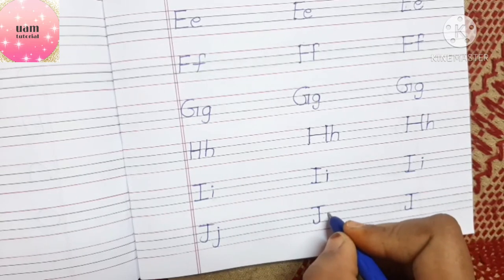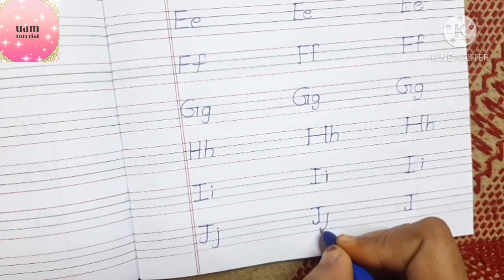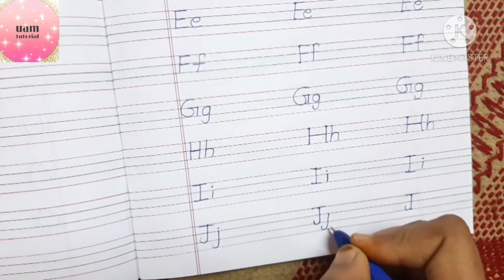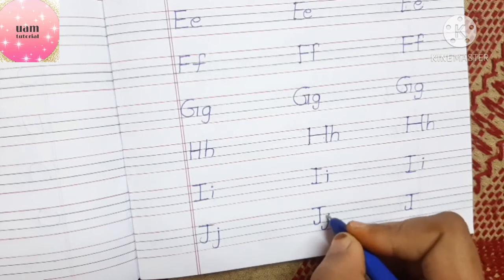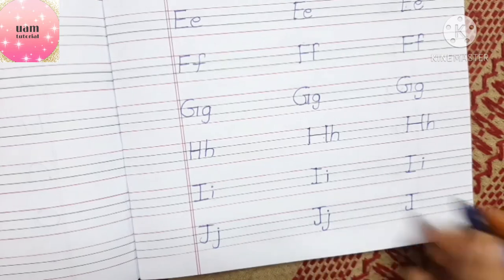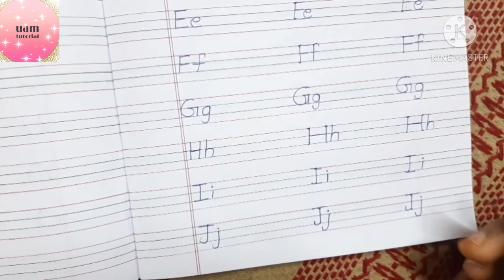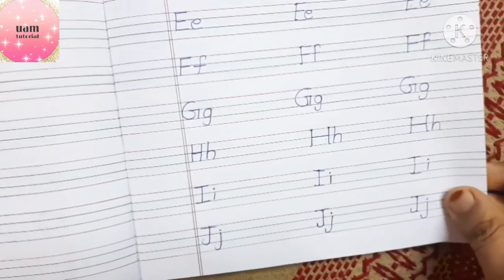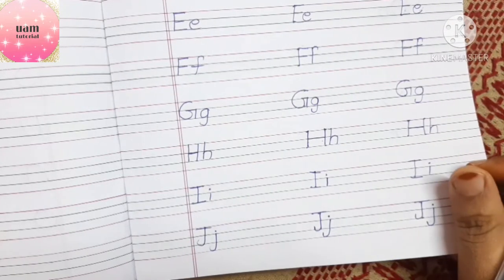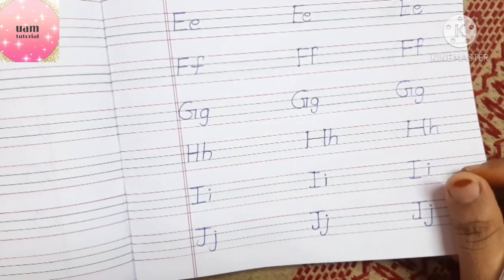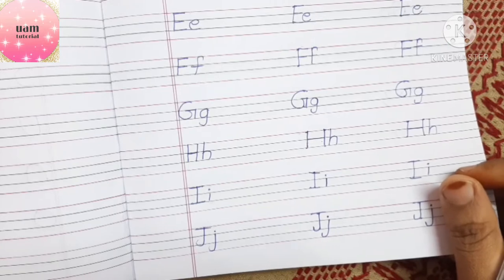For small j: start from the second line to the fourth line — write a standing line, then a small upward curve on the left side, then a dot. Words starting with J: jug, joker.